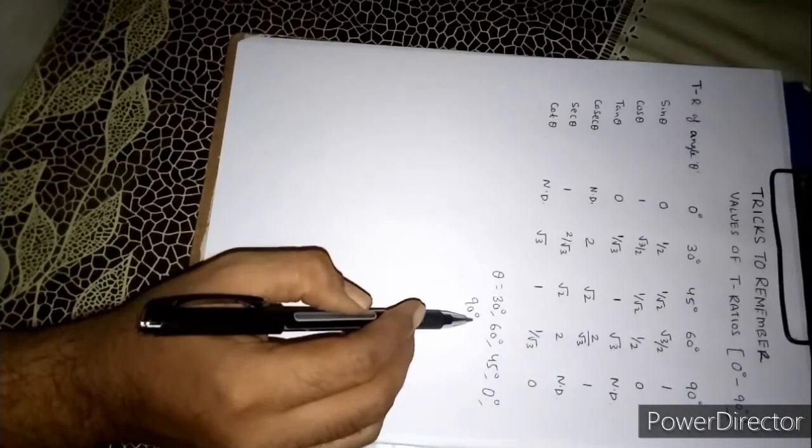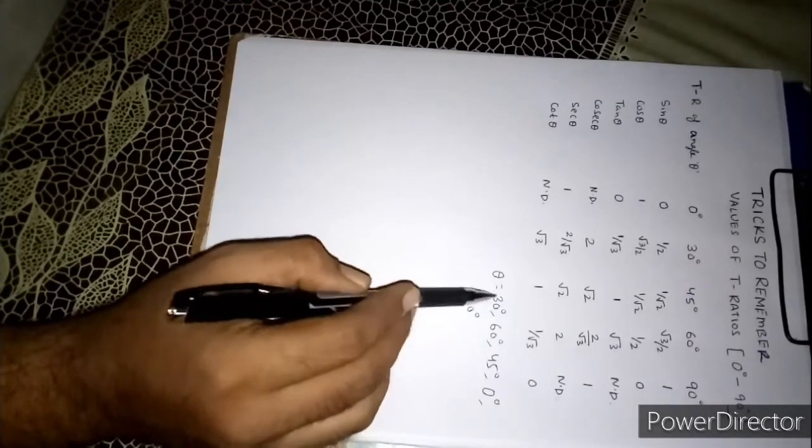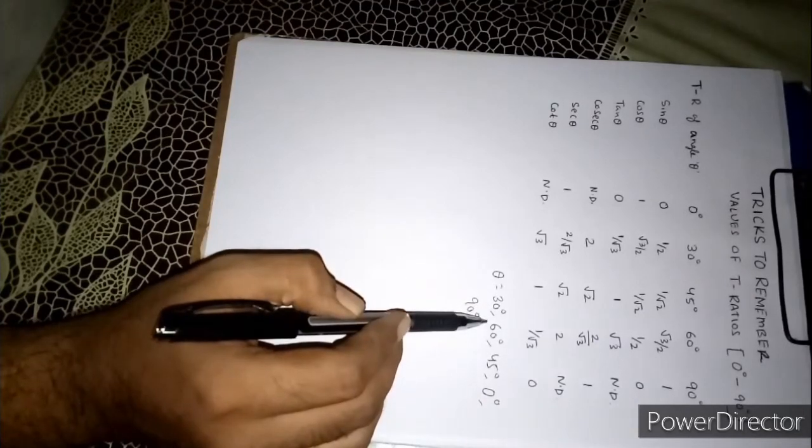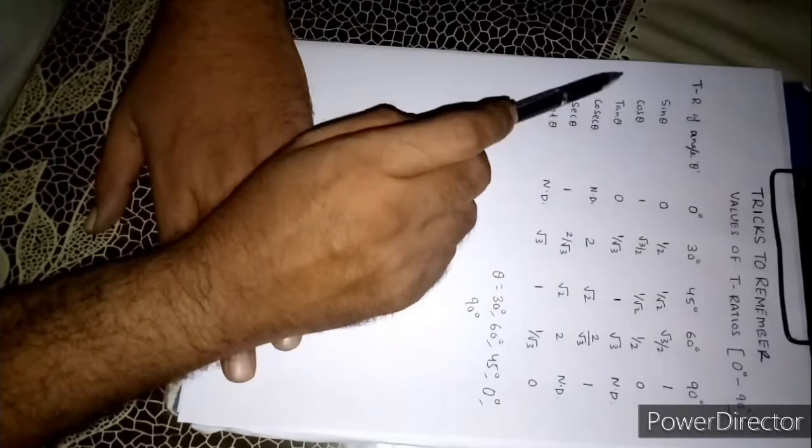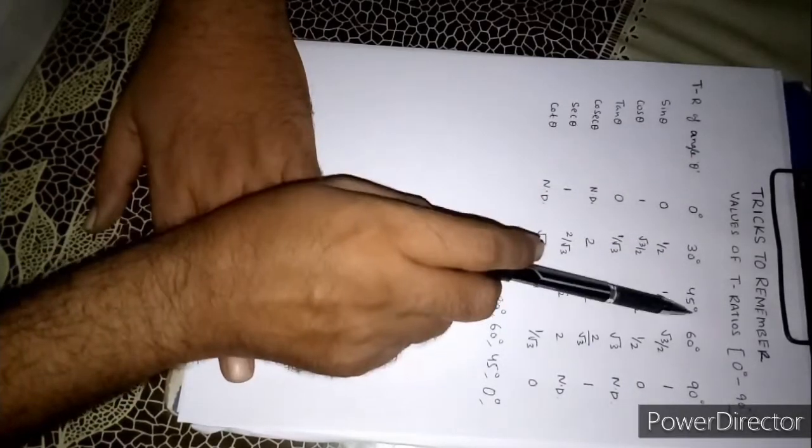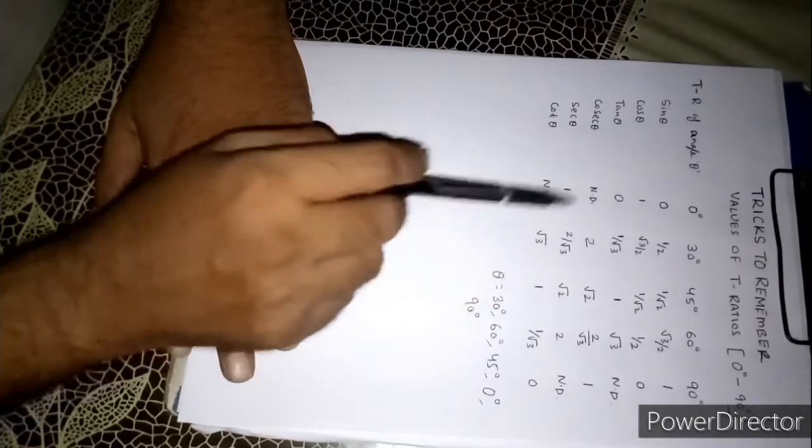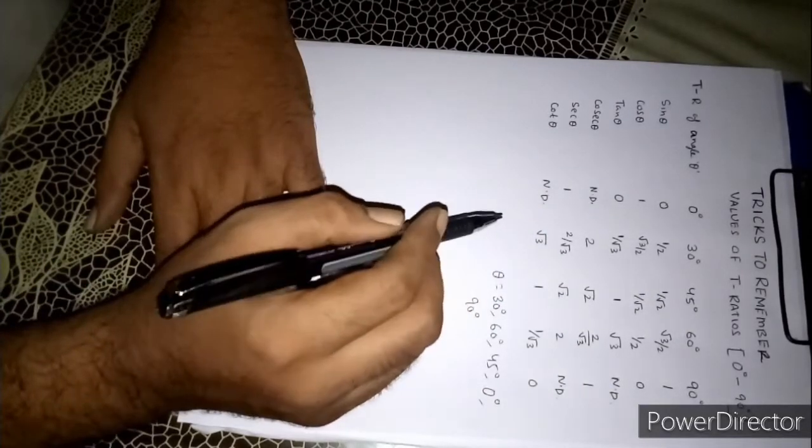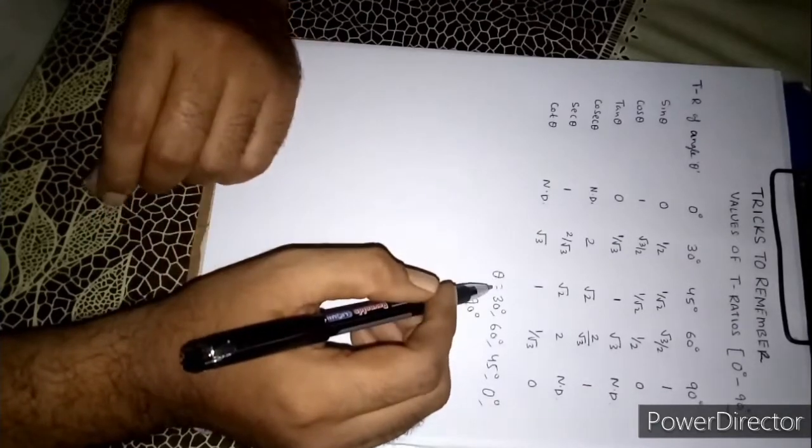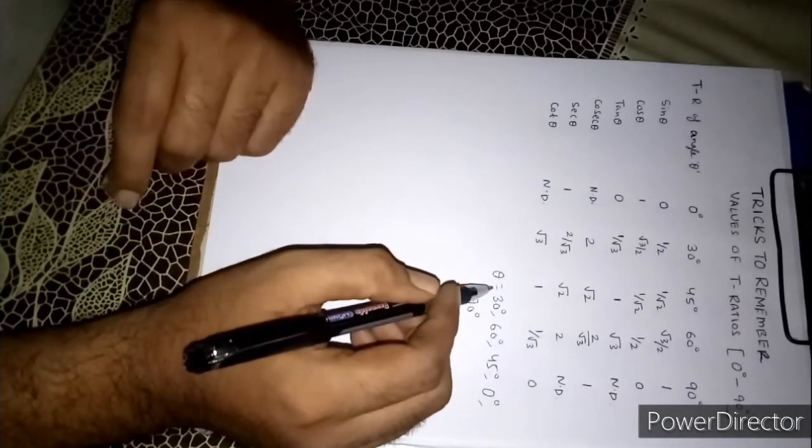Now students generally face difficulty to remember the values of sine, tan, and cosine of these angles. Generally we have to learn this trigonometric ratio table that sine 0 is 0, sine 30 is half, sine 45 is 1 by root 2. But sometimes students get puzzled during examination. So today I am teaching you a very easy method.